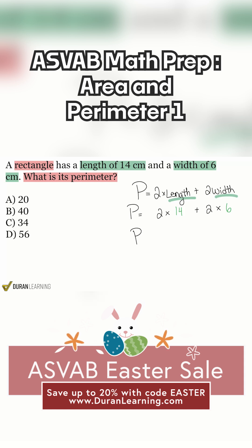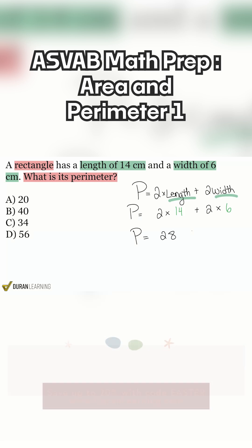So two times 14, that's going to be 28. Two times six, that's going to be 12. And now we have 28 plus 12. And we bring all that together. And that's going to be 40 centimeters. And there we go. And that's why the answer here is B, 40 centimeters.